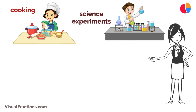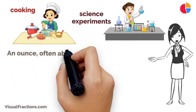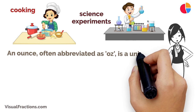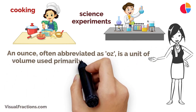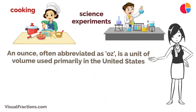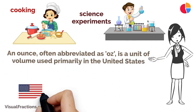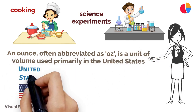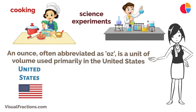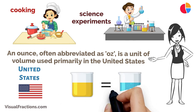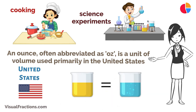First, let's understand the units involved. An ounce, often abbreviated as oz, is a unit of volume used primarily in the United States. A liter, or L, is a metric unit of volume that is widely used around the world.